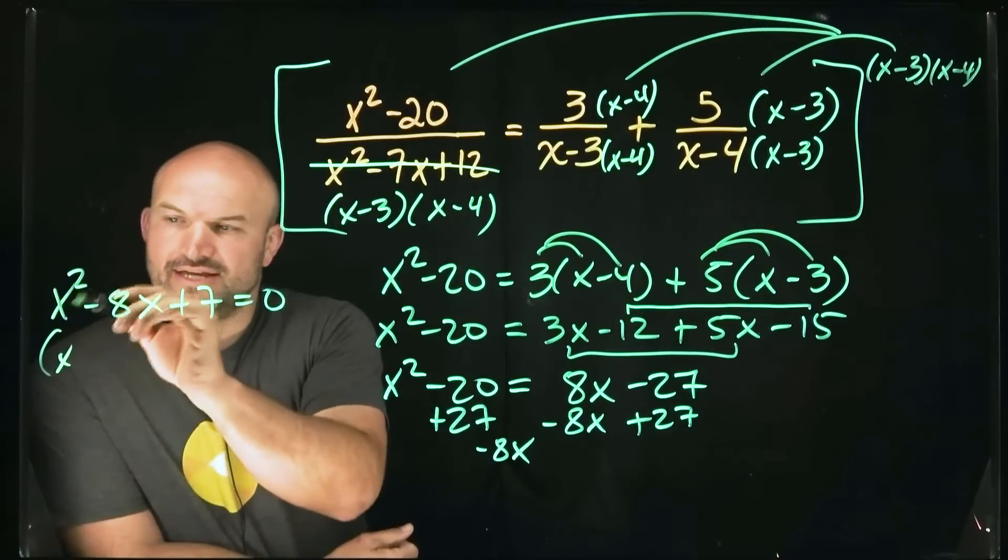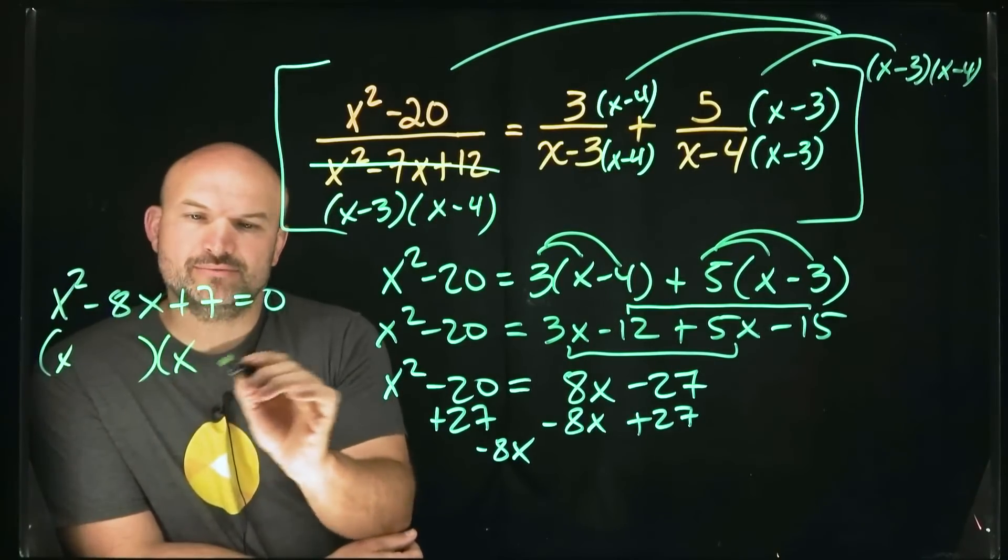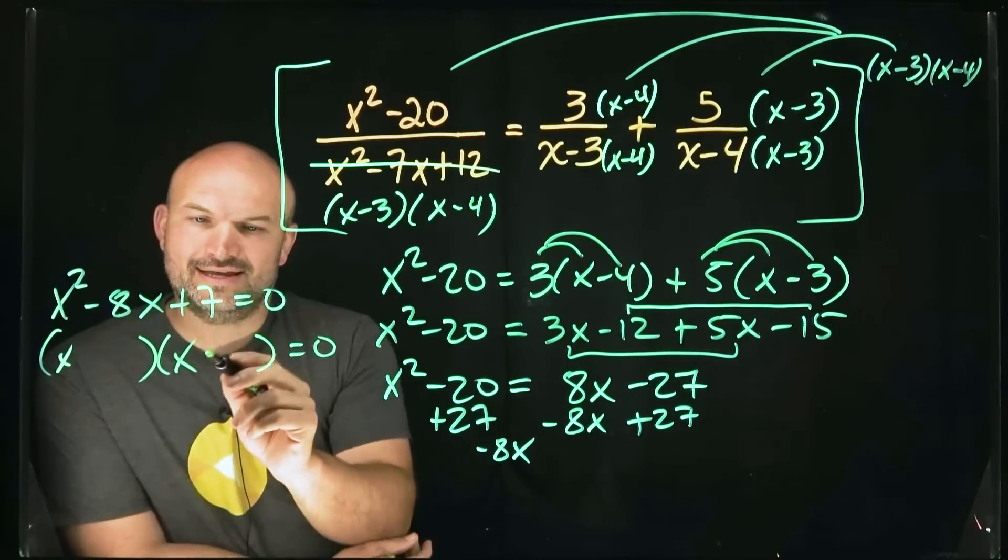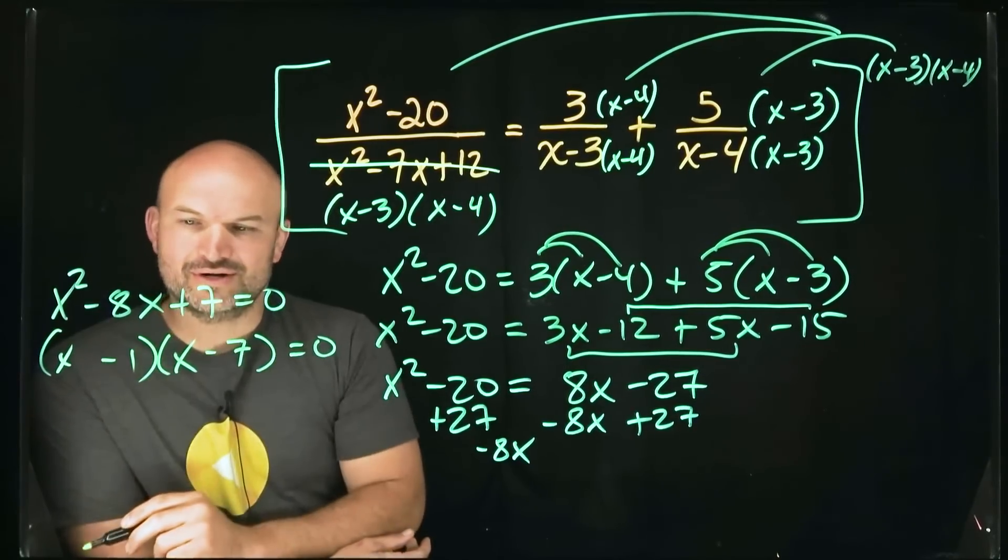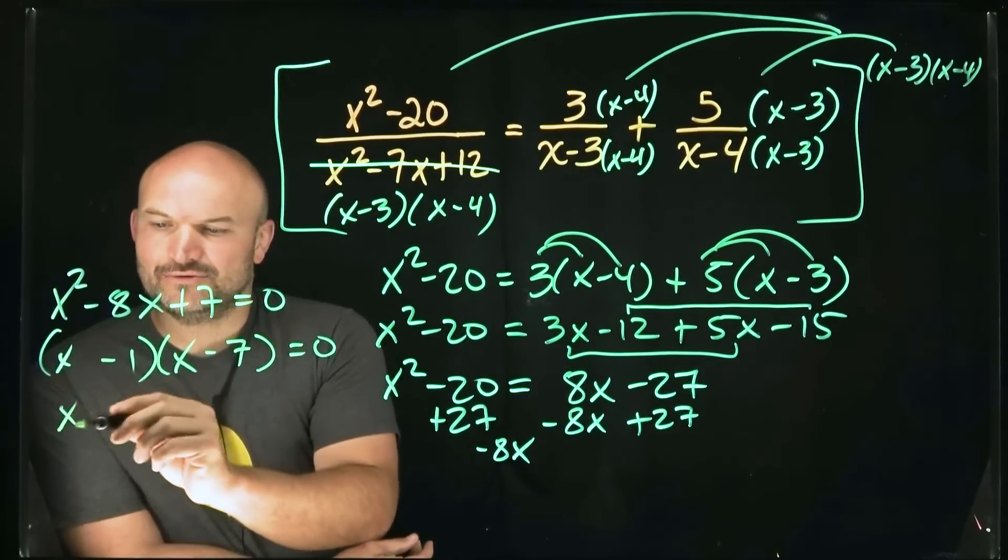And so since this is a quadratic, just an x squared, I know my two binomials are going to look like that. And then if you're thinking negative 7 and negative 1, you are correct. So now I can just apply the zero product property.